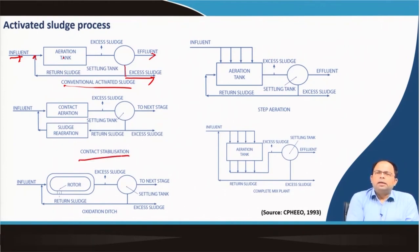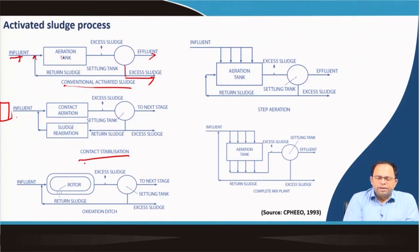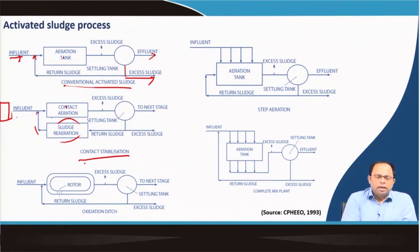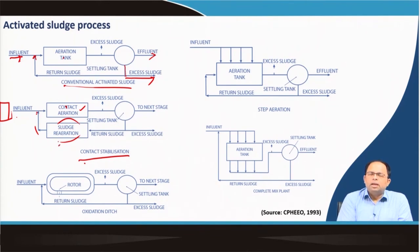In contact stabilization, there is no requirement for primary sedimentation. The influent wastewater goes directly into the contact aeration tank. The return sludge is first re-aerated, which causes further stabilization of organic matter and reduces sludge quantity. This is then mixed with the wastewater for further aeration, making the removal of suspended matter and biological matter much more effective. The secondary settling tank takes care of both suspended matter and suspended organic matter deposited as sludge.